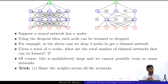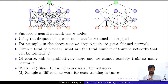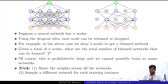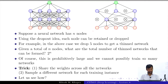The first trick is to share the weights across all these networks. The second trick is to sample a different network for each training instance. This addresses the problem of having 2^n networks to train.